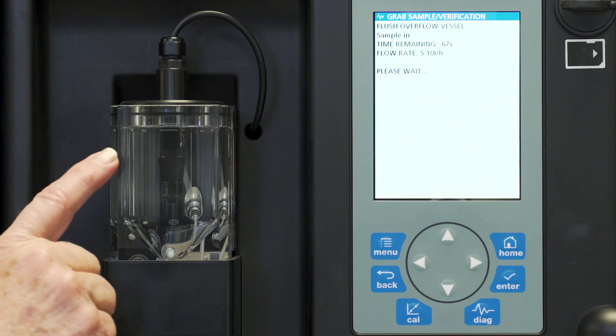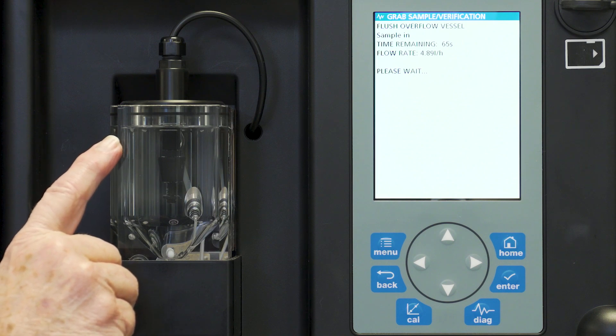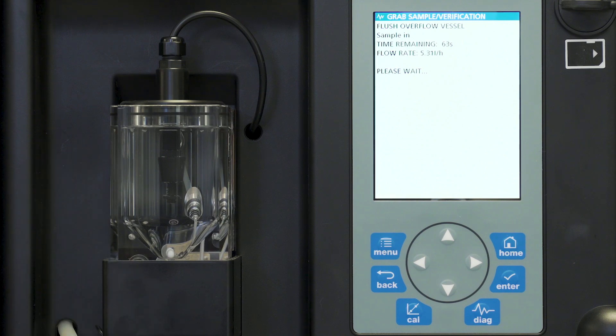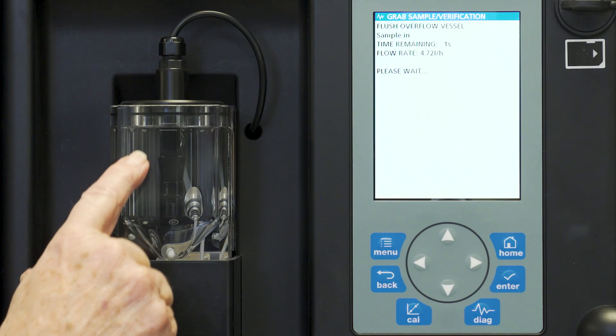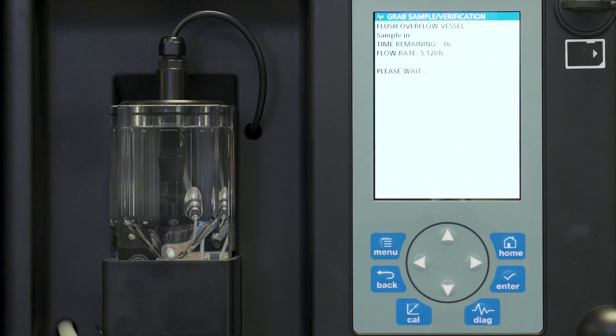You will notice now that the overflow chamber has completely filled. So now we're finishing up this final rinse. This sample will now drain out of the overflow cell to prepare us to add our actual sample.